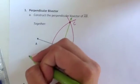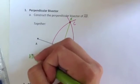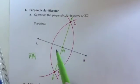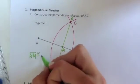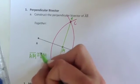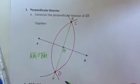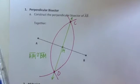Here I can make the conclusion that segment AM is congruent to segment BM, because a midpoint divides a segment into two congruent segments.